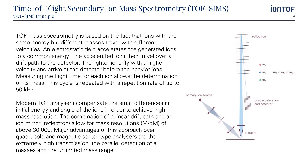TOF mass spectrometry is based on the fact that ions with the same energy but different masses travel with different velocities. An electrostatic field accelerates the generated ions to a common energy. The accelerated ions then travel over a drift path to the detector. The lighter ones fly with a higher velocity and arrive at the detector before the heavier ions. Measuring the flight time of each ion allows the determination of its mass. This cycle is repeated with a repetition rate of up to 50 kHz.